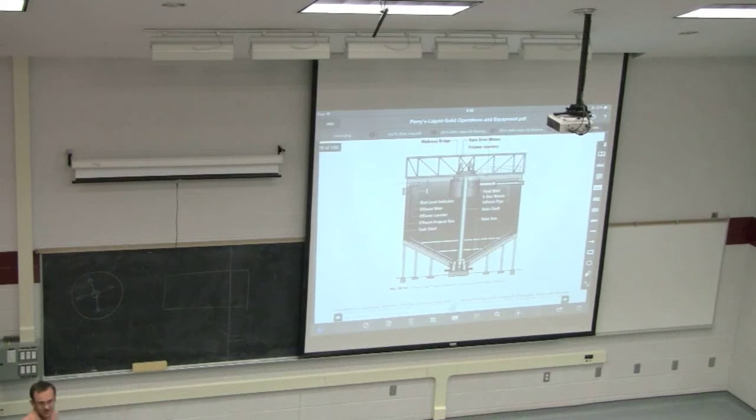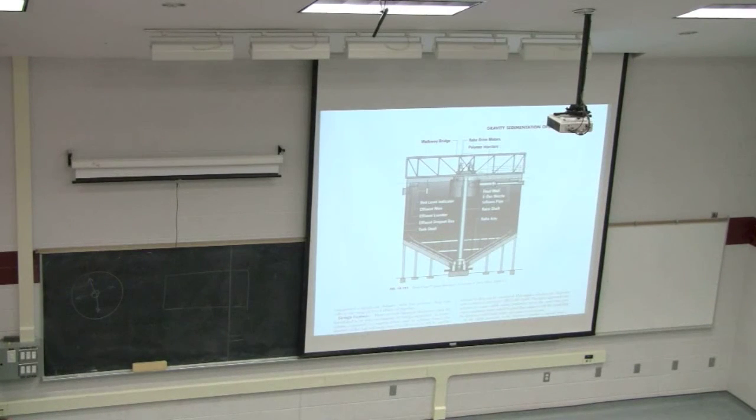So as you can see here, the material is fed at the top. There's polymer injectors, your feed is coming in at the top, and it's dispersed here. And that feed will flow in a radial direction to the outer edges. That's the effluent weir and the effluent launder. So that's taking the overflow, the liquid, out. The solids settle down to the bottom. There's this rake that we spoke about, and the solids are withdrawn through those two points at the bottom.